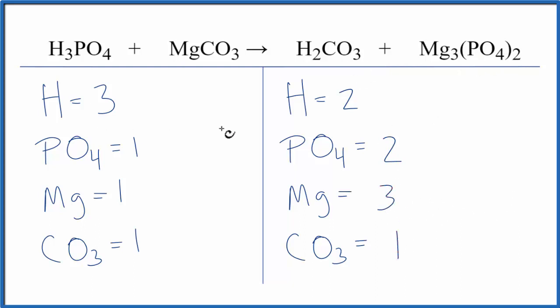Why don't we leave the hydrogens to last? Let's fix the magnesiums. We could put a three in front of the magnesium carbonate here. So one times three, that would fix the magnesiums. And then the CO3, we have one of these times three. We now have three of the carbonates. That's okay.